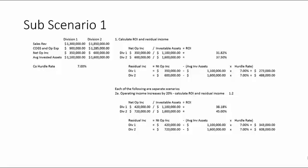The first scenario: let's assume that operating income is going to increase by 20 percent, so we use a multiplier of 1.2. For Division 1 we take $350,000 net operating income, multiply by 1.2, and divide by investable assets of $1.1 million — giving an ROI of 38.18 percent. For Division 2 we take $600,000 times 1.2 divided by $1.6 million and get 45 percent.